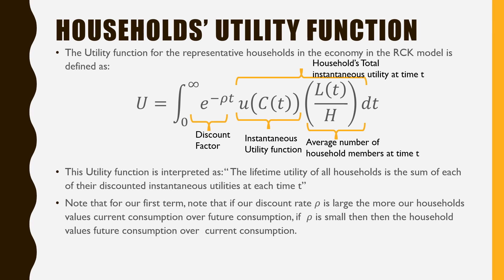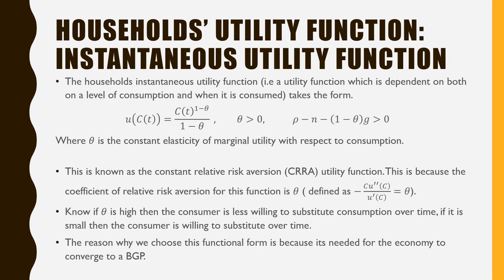Note that for our first term, E raised to the power of rho T: if our discount rate rho is large, the household values current consumption over future consumption more; and if rho is small, then the household values future consumption over current consumption.